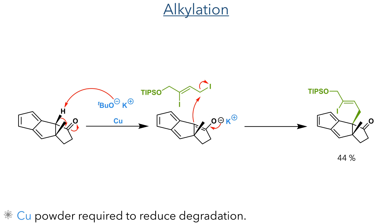This low yield could be attributed to the sterically hindered nature of the nucleophile, and also the significant degradation of the starting material, as cyclopentadienes can be quite susceptible to decomposition under basic conditions. They found that this decomposition could be reduced by adding copper powder, which allowed them to recover 20% of the starting material in addition to the 44% yield of product.